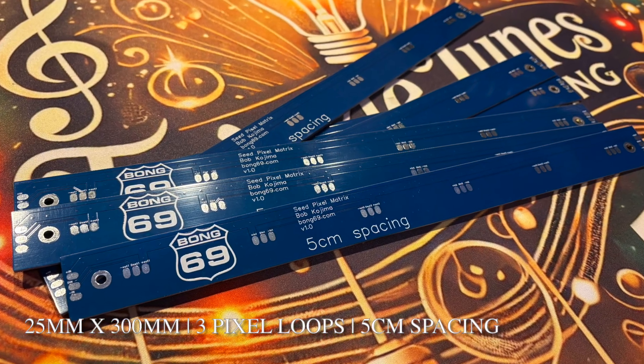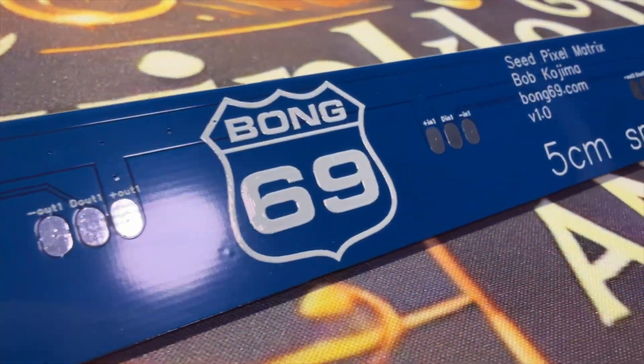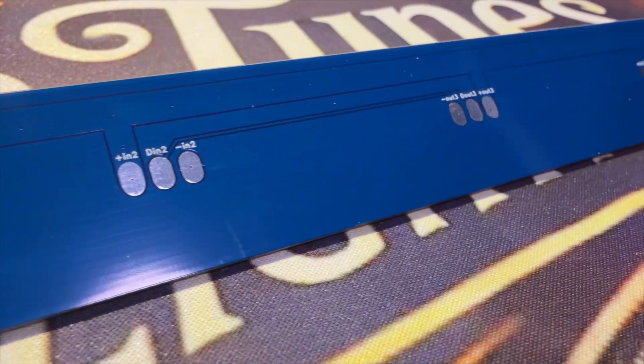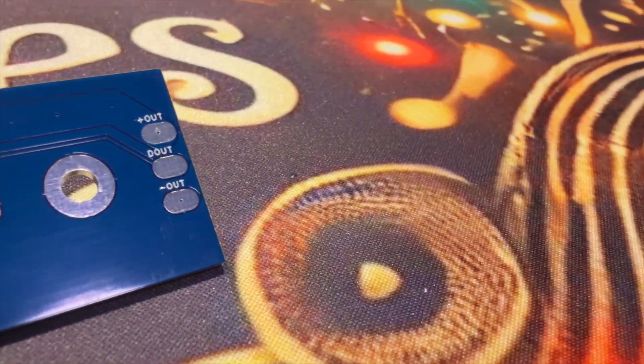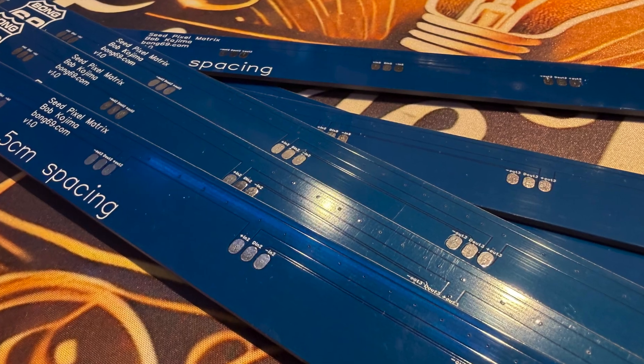So this board is super compact, about an inch wide, just under a foot long, and laid out perfect for 5 cm seed pixel spacing. It runs 3 loops of pixels per board, and the traces send power all the way down the length, so you get built in power balancing.